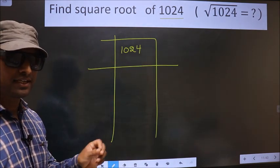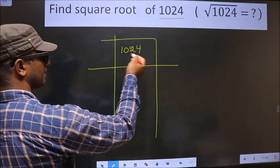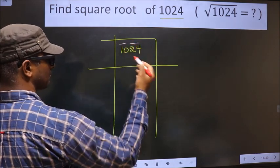Now we should divide the given number into pairs, starting from this side. So these two numbers, one pair and these two numbers, another pair.